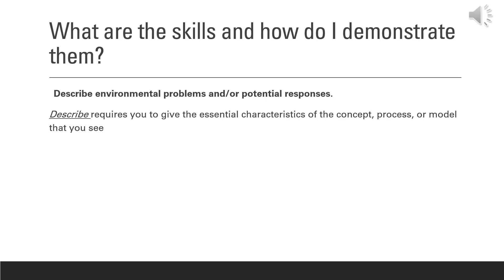The last skill is to describe environmental problems and/or potential responses. Description requires you to give essential characteristics. In this case, we're looking at problems and proposed solutions. Remember, when you are asked to give a proposed solution, the solution must be viable and logical. If it fails to meet either of those characteristics, it will not be considered for scoring purposes.